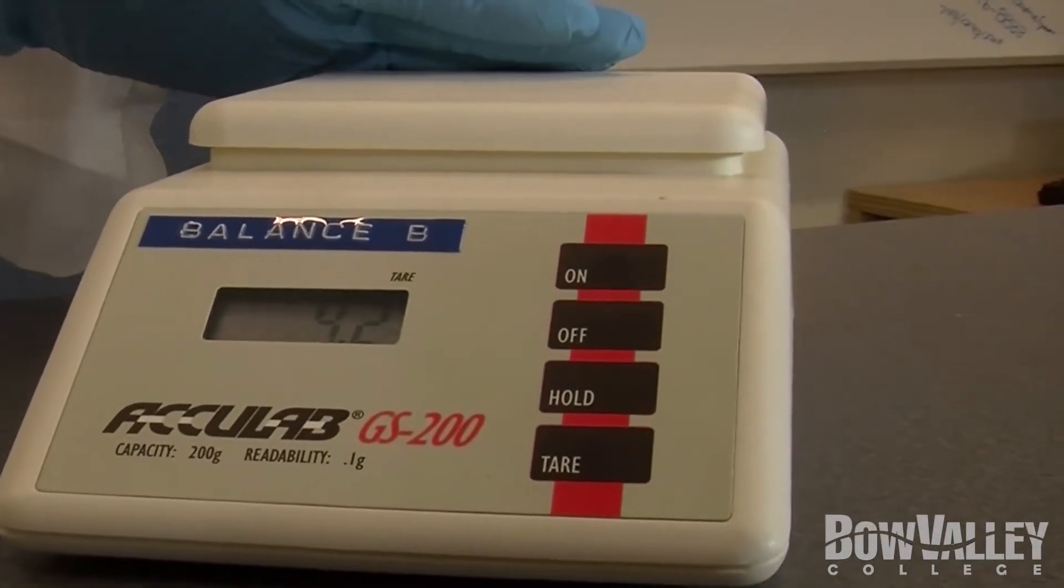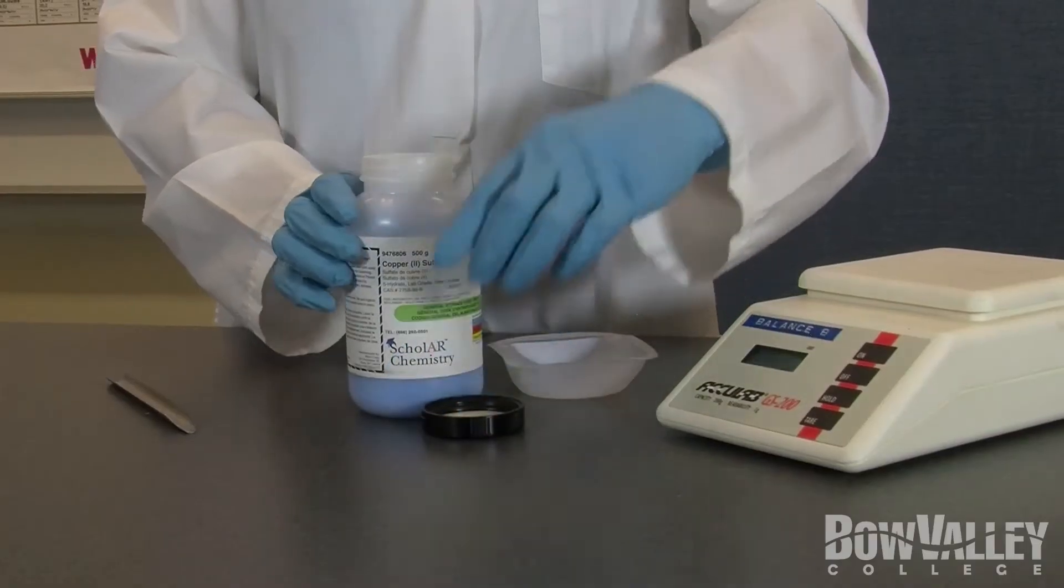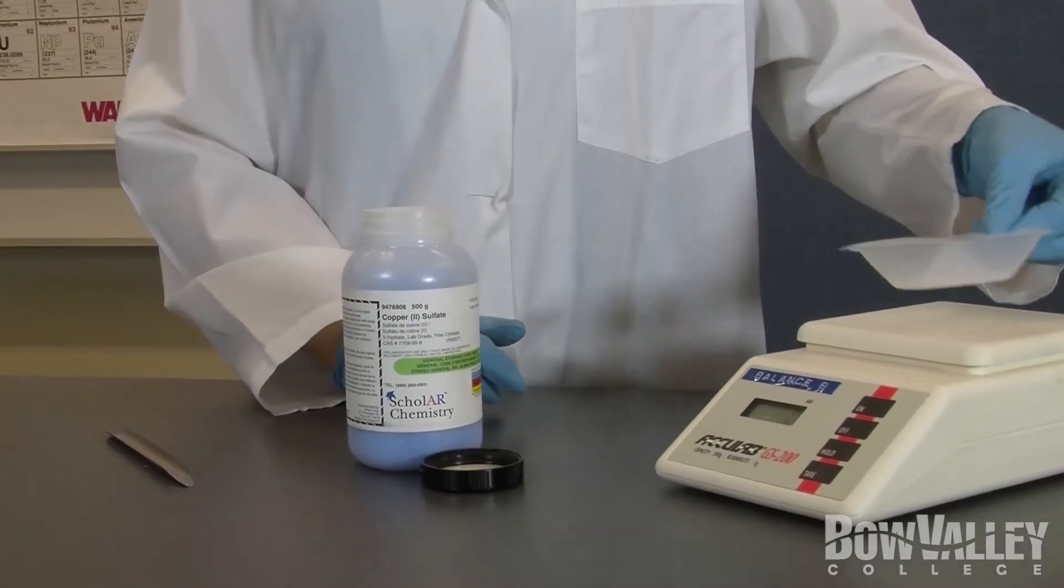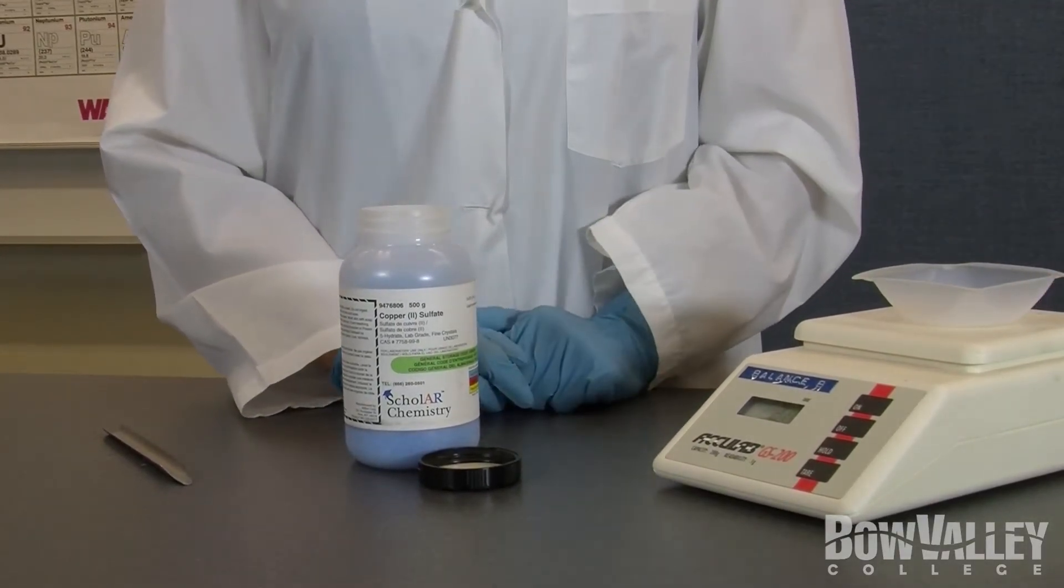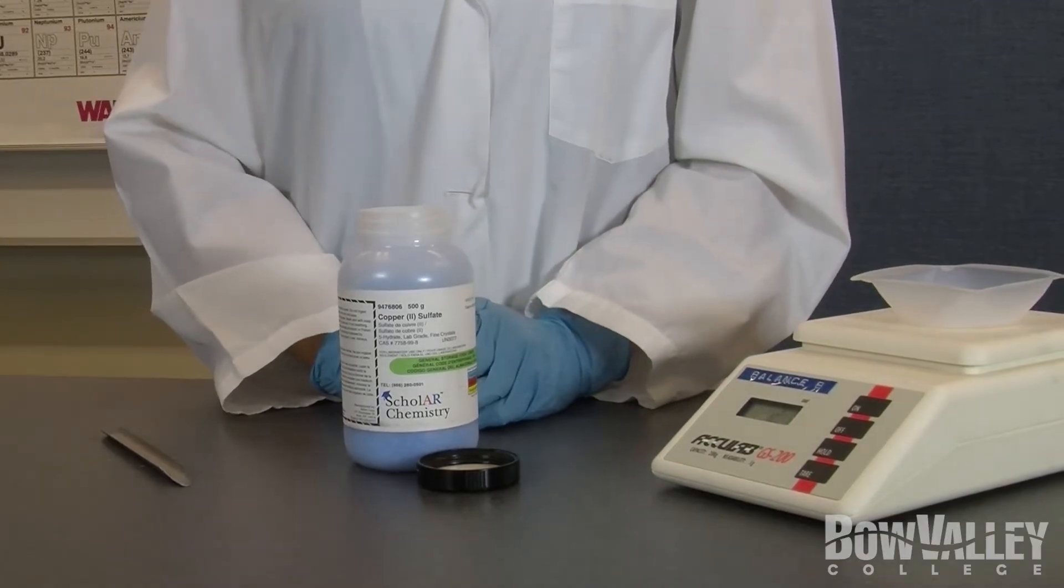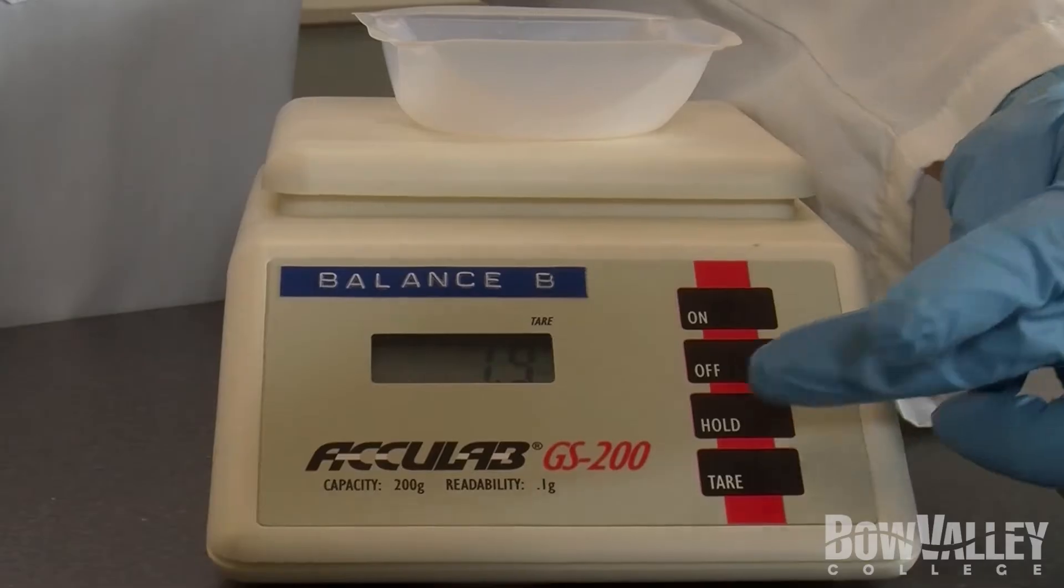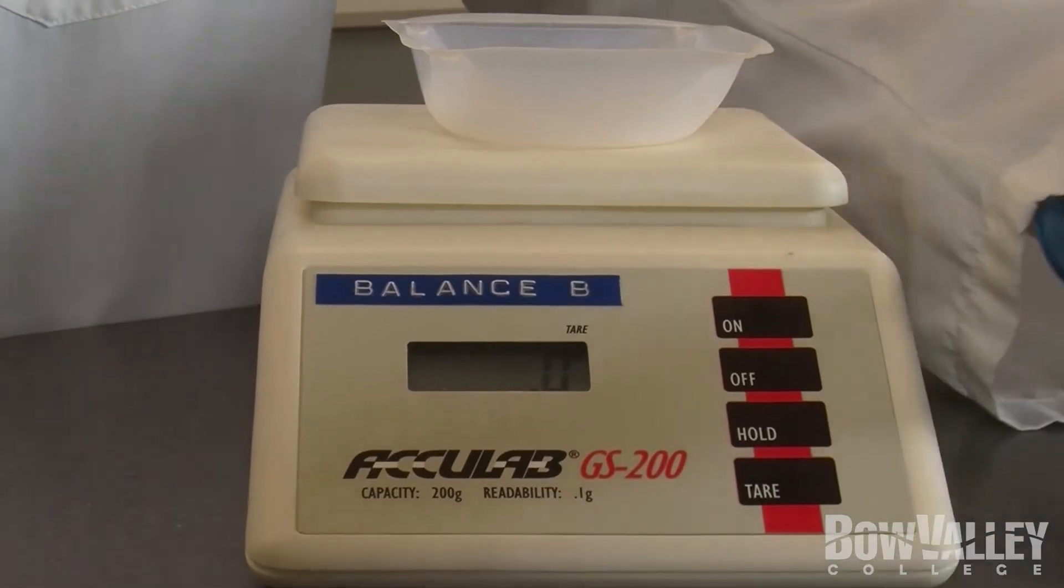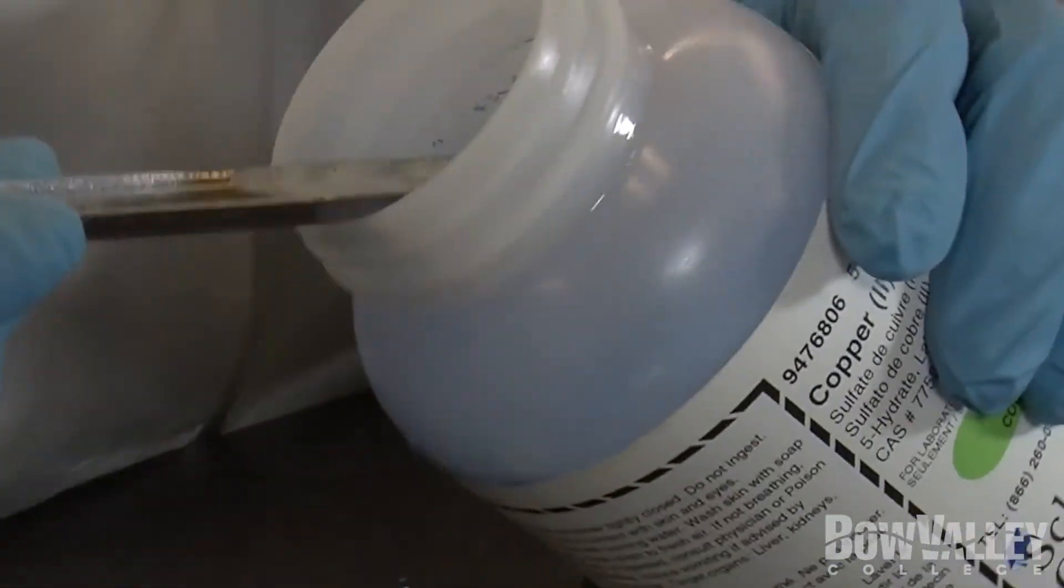First we need to take our copper(II) sulfate and have it ready to start measuring. Put our weighing dish onto the scale. You will see a value of 2.1 on the scale. We need to tare that, which means it takes away that value and all we'll be measuring is the product inside the weighing boat.